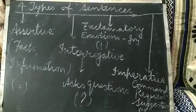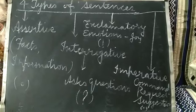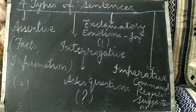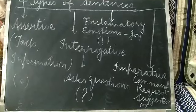In assertive sentences, we know about facts and information. And it always ends with full stop, like, John is my best friend.